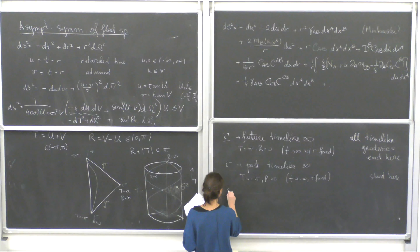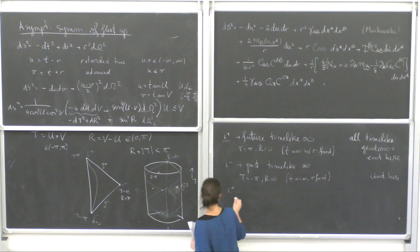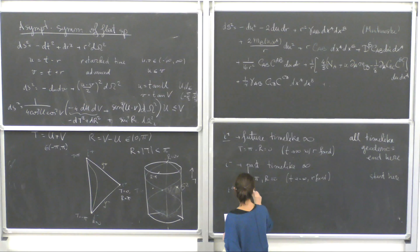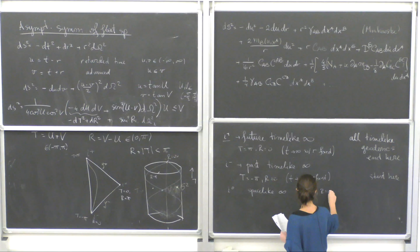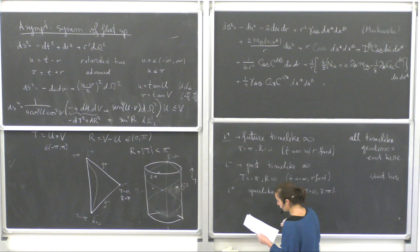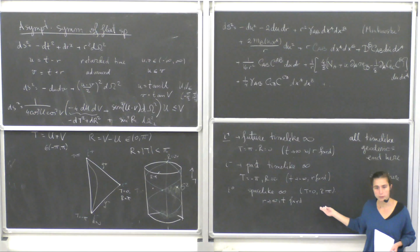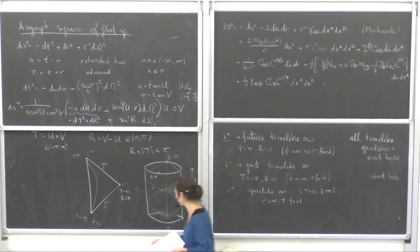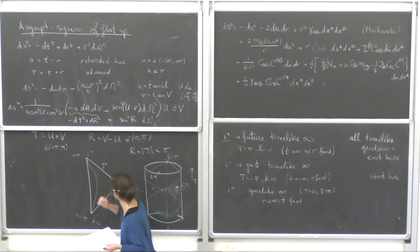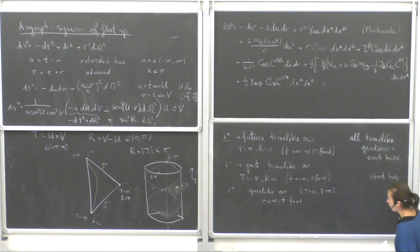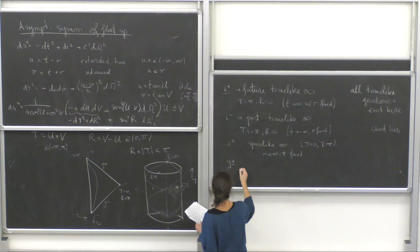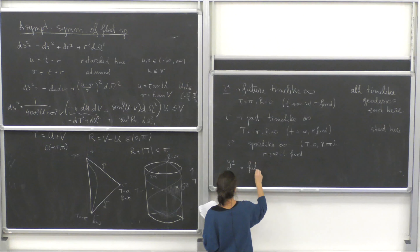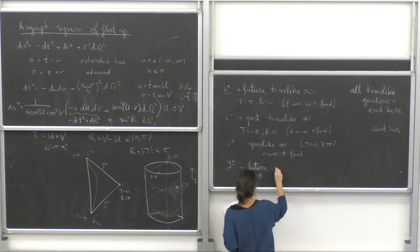i⁰ is spatial infinity: the point T = 0, R = π, corresponding to r → ∞ with t fixed — hence the name. All spacelike geodesics end here. More interestingly, there are null infinities: ℐ⁺ (future null infinity) and ℐ⁻ (past null infinity), which are null three-dimensional surfaces (not points). All null geodesics start at ℐ⁻ and end at ℐ⁺.